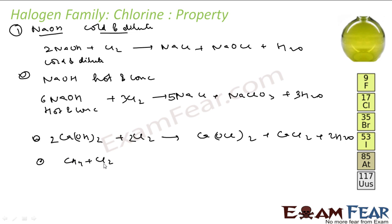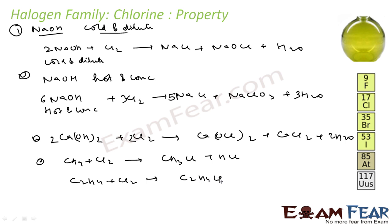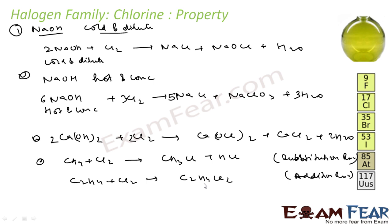For example, methane reacts with chlorine — since there's no double bond to break, it undergoes a substitution reaction to give CH3Cl (methyl chloride) and HCl. If we take an unsaturated hydrocarbon like ethene (C2H4), it reacts with chlorine via an addition reaction to give C2H4Cl2 — that is 1,2-dichloroethane.